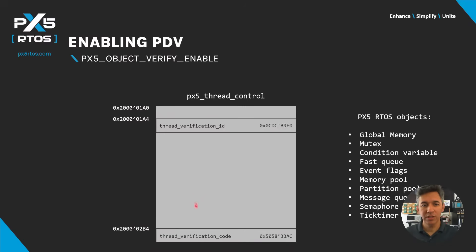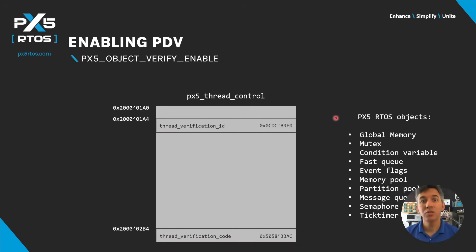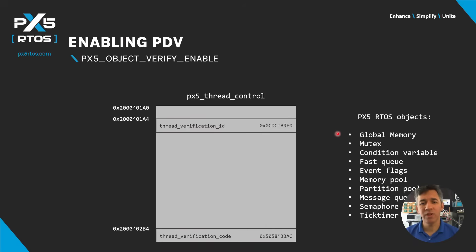Note that the verification ID and verification code are at the top and bottom of the PX5 thread control structure respectively. Therefore, any sequential memory corruption at the top or bottom of the structure has a good probability of being detected. The same technique is used to verify all PX5 RTOS objects in this list, as well as the global PX5 RTOS internal data, which are also protected with PDV.